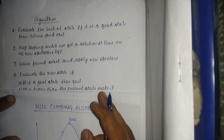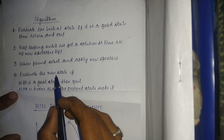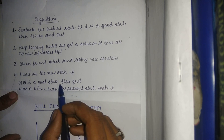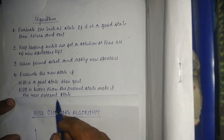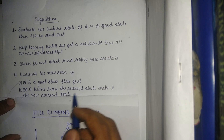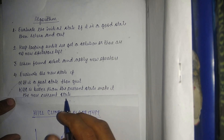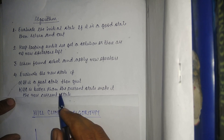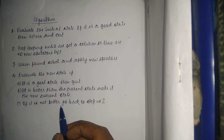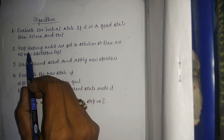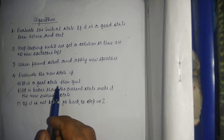Step four, the most important one: evaluate the new state. If it is a goal state, then quit. If the new state is better than the current state, make it the new current state — that is, if it moves us towards the goal, we select it and discard the previous state. If it is not better, go back to step two and repeat the procedure. This is how we solve the hill climbing algorithm.